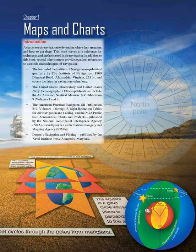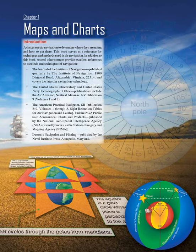The United States Observatory and United States Navy Oceanographic Office publications include The Air Almanac, Nautical Almanac Nevada Publication 9, Volumes 1 and 2, The American Practical Navigator, SR Publication 249, Volumes 1 through 3, Site Reduction Tables for Air Navigation, and the NGA Public Sail Aeronautical Charts and Products, published by the National Geospatial Intelligence Agency (NGA), formerly known as the National Imagery and Mapping Agency (NIMA). Dutton's Navigation and Piloting, published by the Naval Institute Press, Annapolis, Maryland.